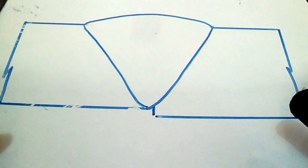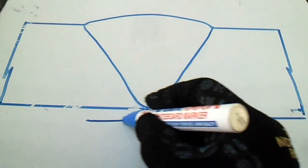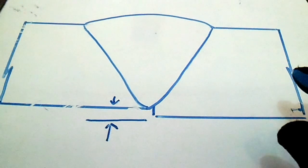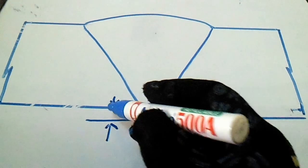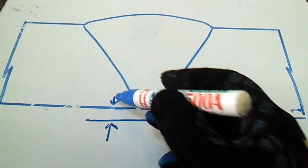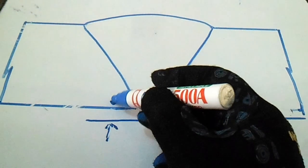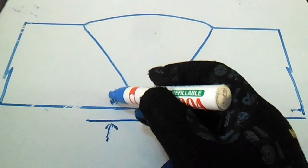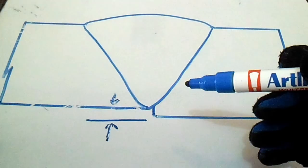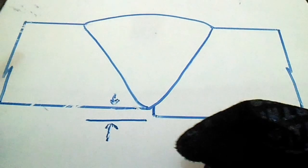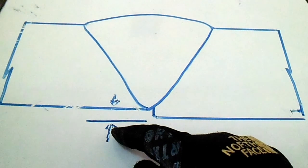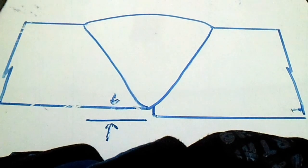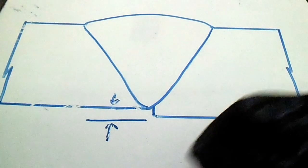The first weld defect is misalignment. If you see here, there is a misalignment of the fit. This is the first defect — mismatch or misalignment. Based on codes and standards, there is a tolerance for this misalignment. The welding inspector knows the tolerance and refers to codes, project specifications, WPS, and so on.